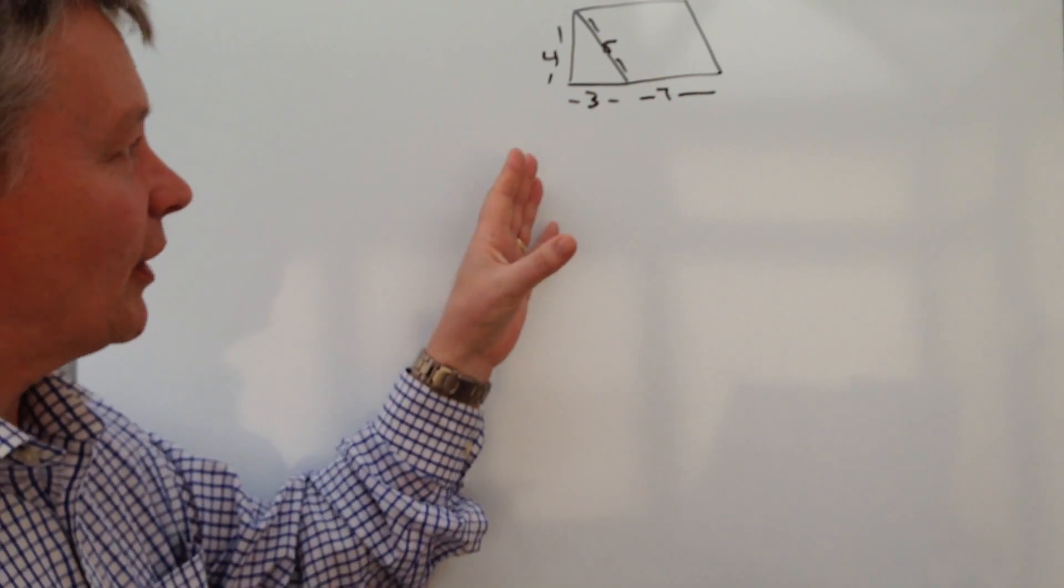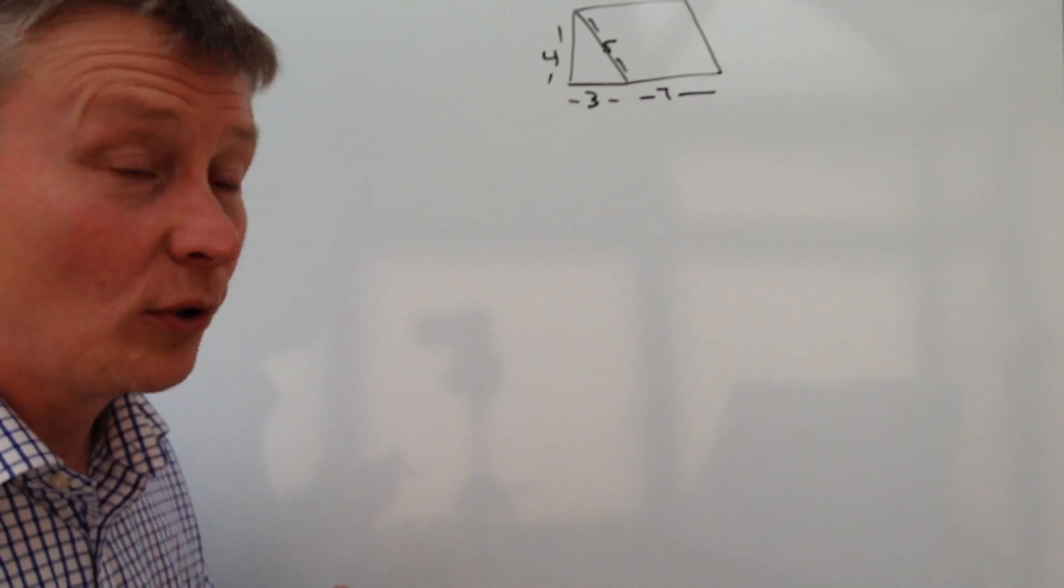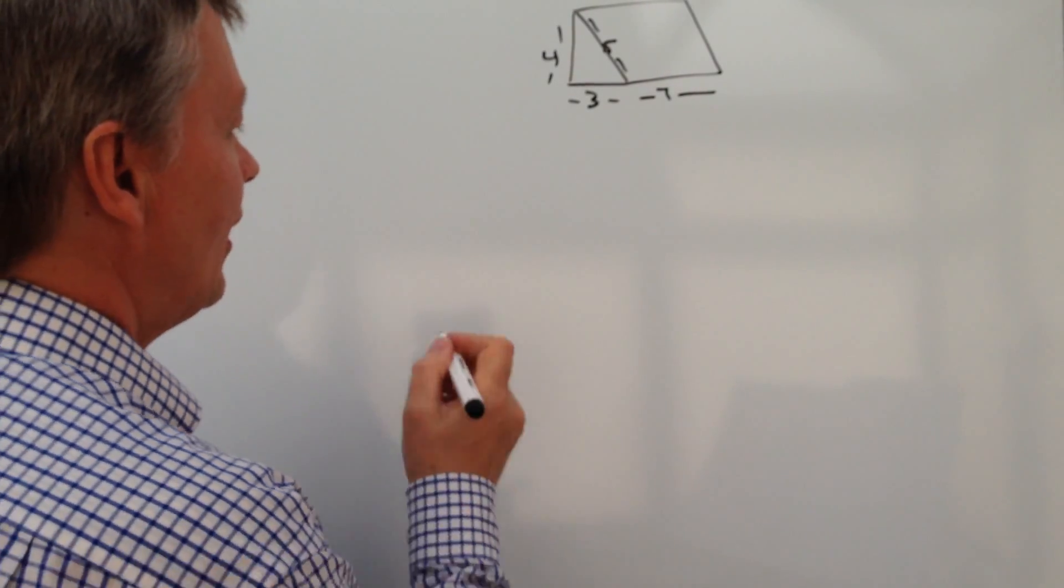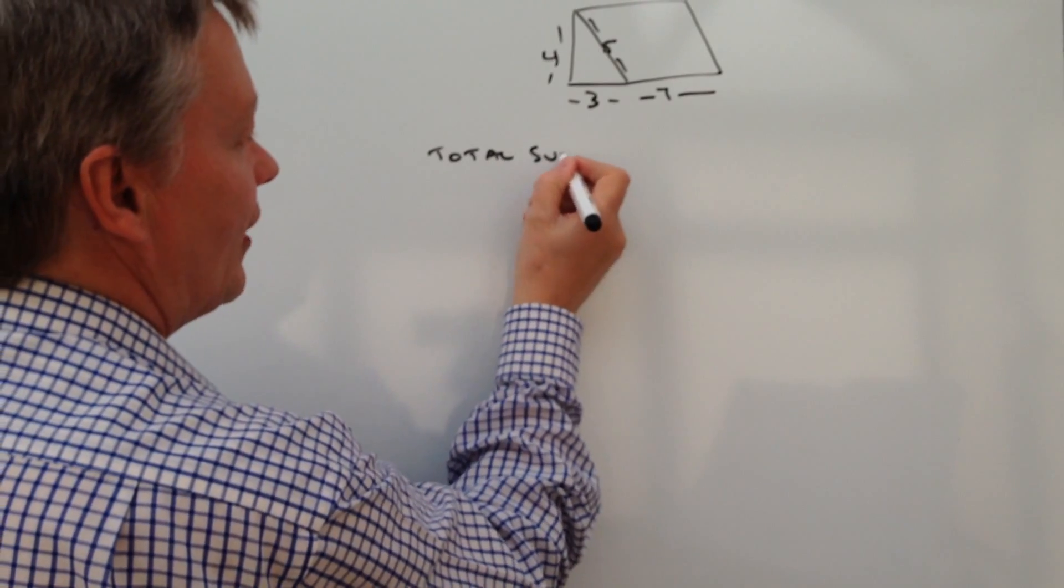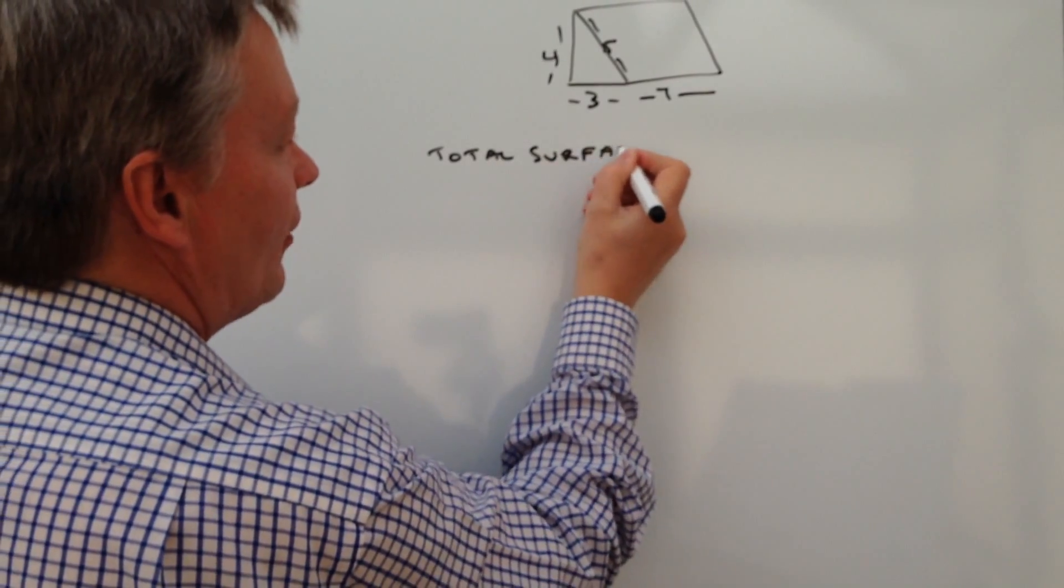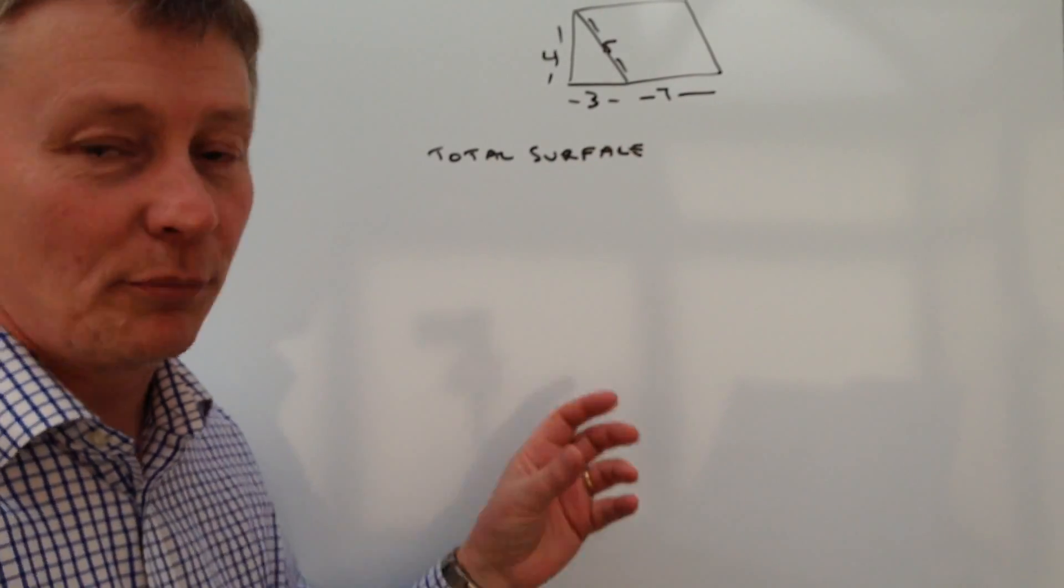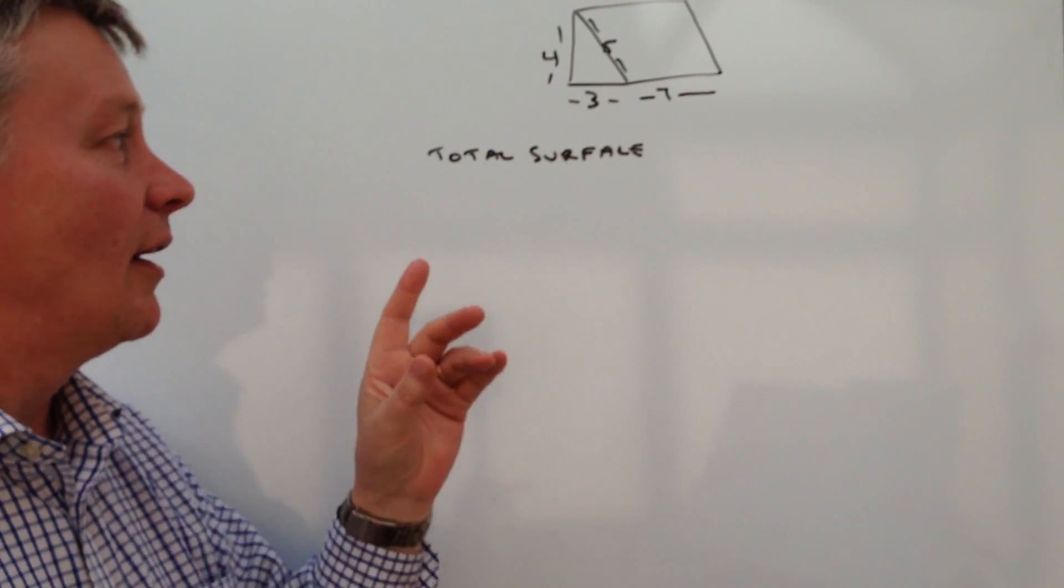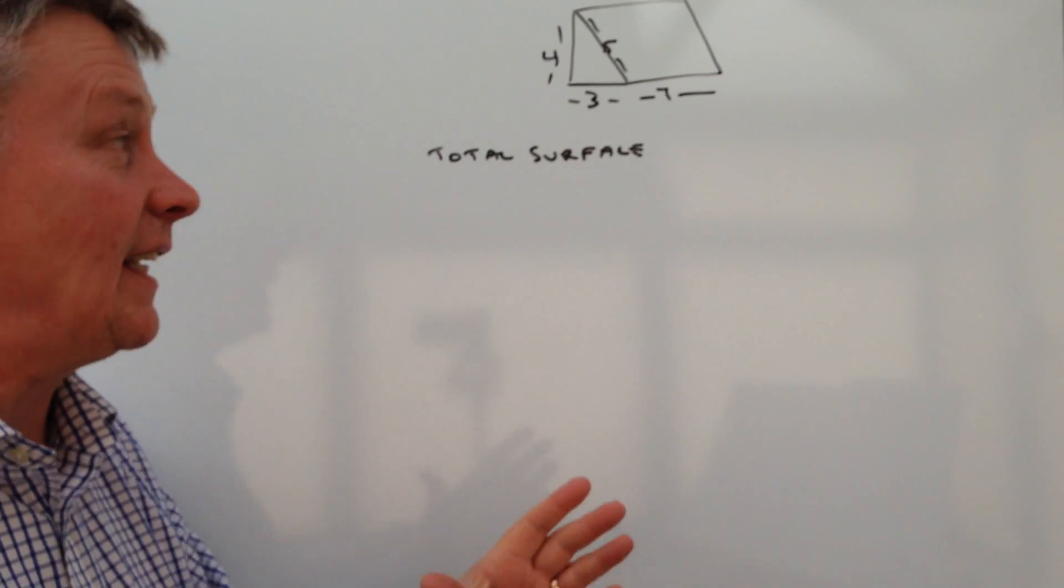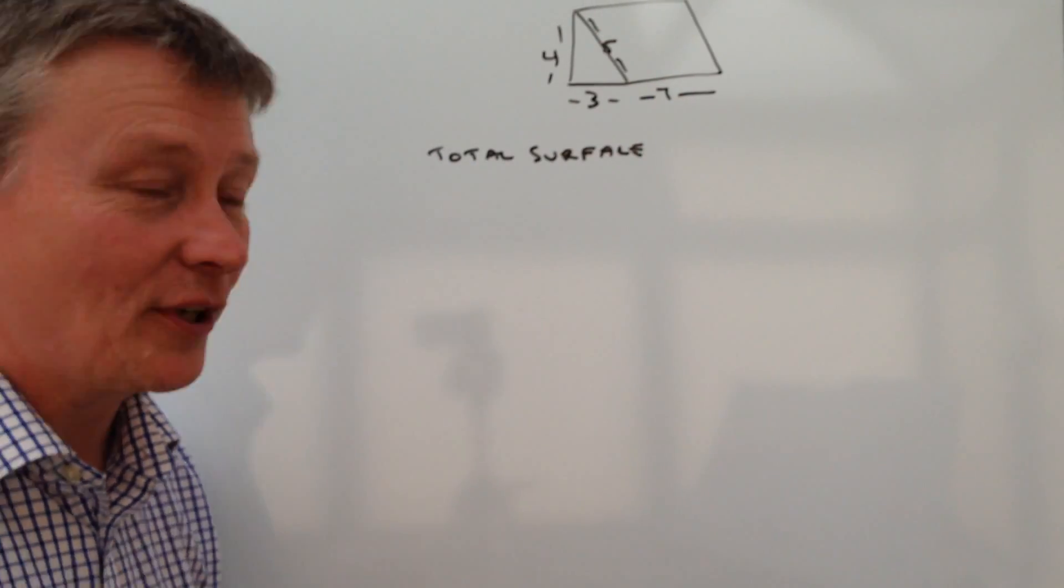So the first thing we're going to look at is going to be the total surface area. So in other words, if you've got yourself a piece of cardboard and you wanted to make this triangular prism, how much cardboard would you need in order to make it?